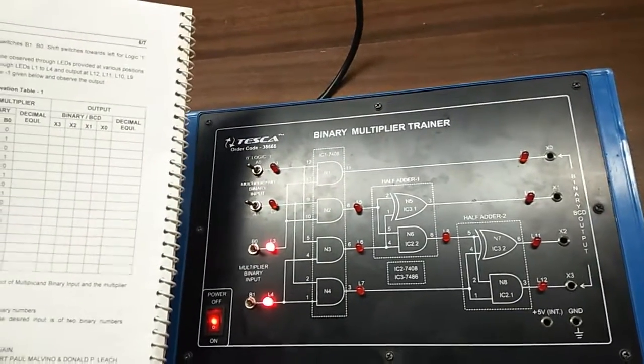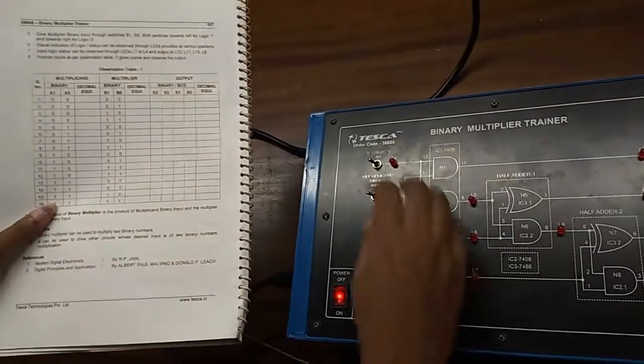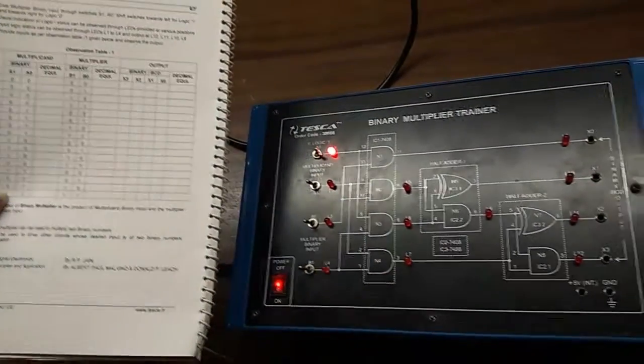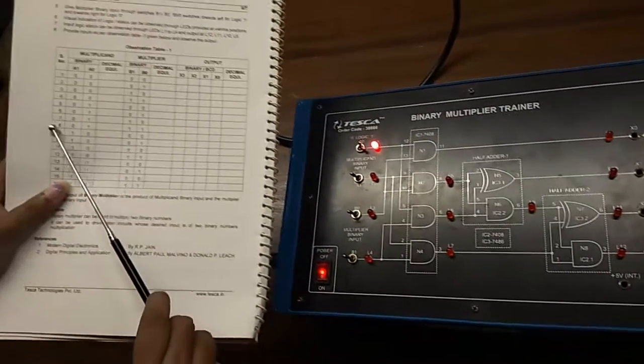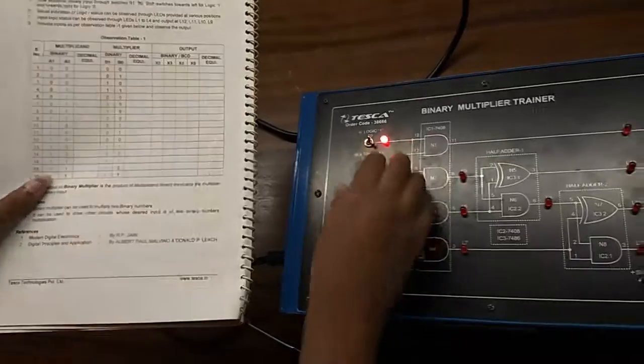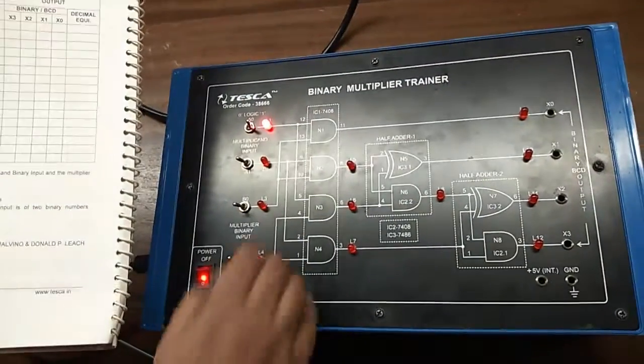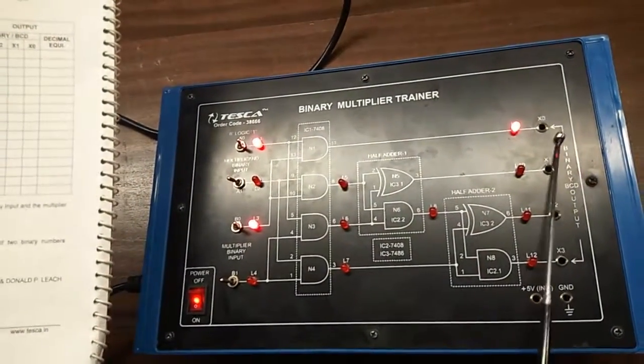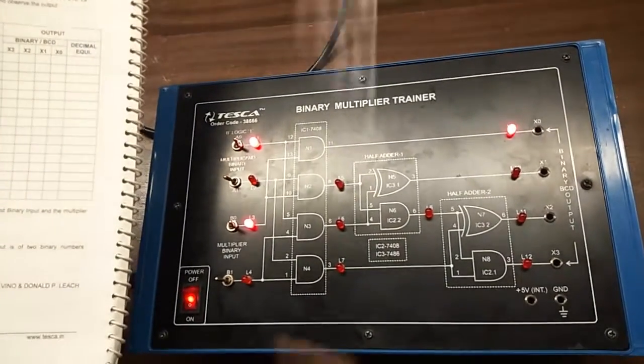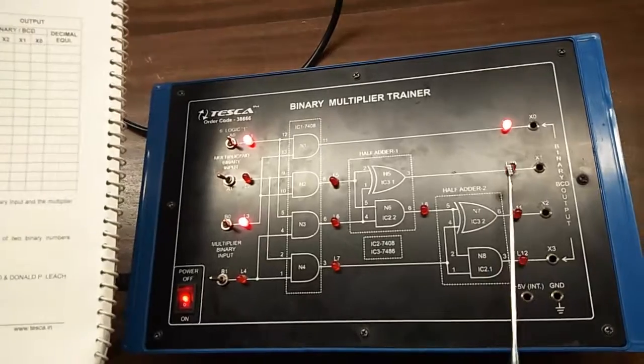Now I am giving number 5 it is 0 1 0 0, again no output. Then I will give number 6 it is 0 1 and 0 1. We can see that this output is 0 0 0 0 1.